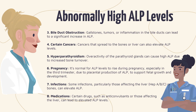At number three we can have a bile duct obstruction — gallstones, tumors, or inflammation in the bile ducts can all lead to a significant increase in ALP. At number four we have certain cancers — cancers that spread to the bones or the liver can also elevate ALP levels, since ALP is usually abundant in both the bones and the liver, so any cancers affecting either will increase ALP.